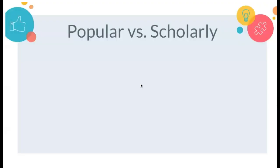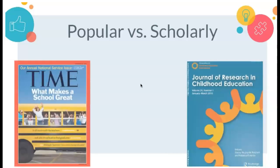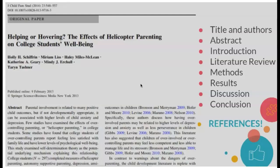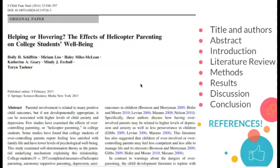Now we know that the databases are going to hold really good scholarly material, but what does that really look like? What's the difference between scholarly and popular articles? We have two examples here — can you tell which is which? Hopefully you paid attention in the last presentation, so you know that the magazine on the left with its flashy cover is a popular source. You're probably familiar with articles in popular magazines, but can you identify a scholarly one?